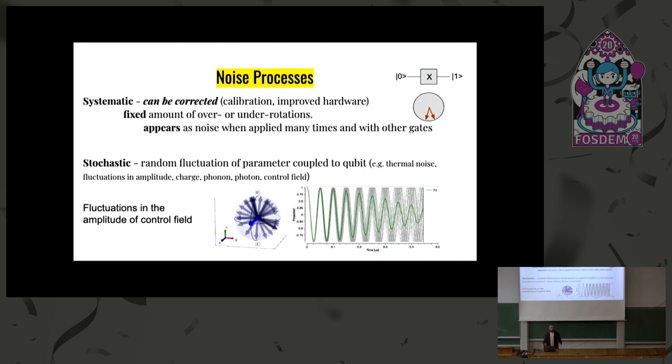So these appear as noises when they are implemented with other gates in sequence. And in the end, they appear noise. But in fact, they are systematic things that can be calibrated. And there is also a stochastic noise which comes from the environment of your qubit.